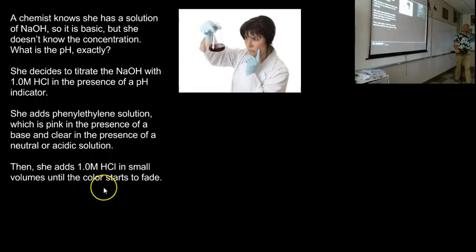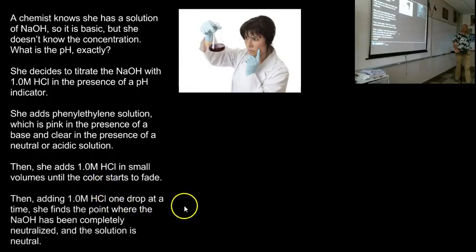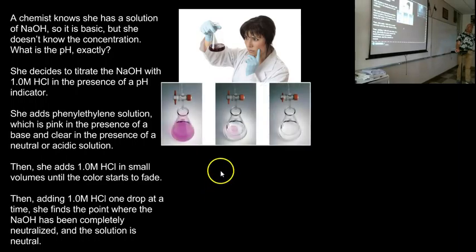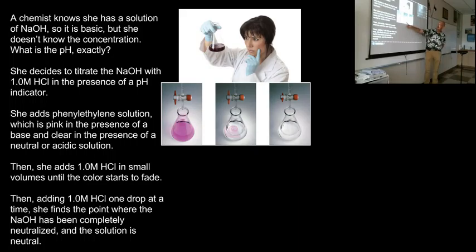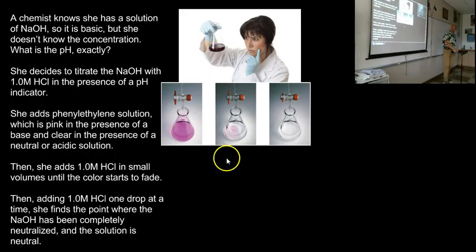She adds 1 molar hydrochloric acid in small volumes until the color starts to fade, then adds it one drop at a time. She finds the point where the NaOH has been completely neutralized and the solution is neutral. We start with a pink solution of base, slowly add acid one drop at a time, and when the color starts to fade we go very slowly to measure as accurately as possible the amount of hydrochloric acid added. When it's clear, we stop and measure how much acid went in to neutralize the solution.